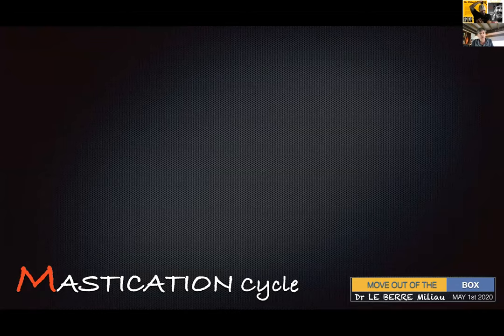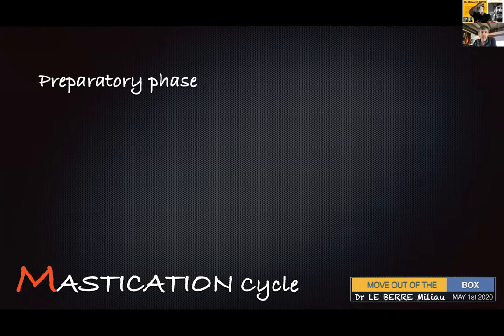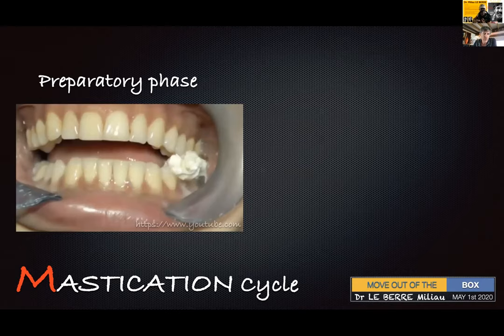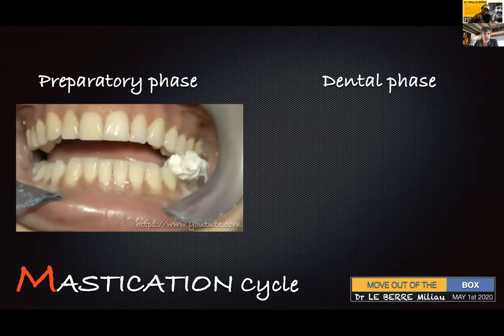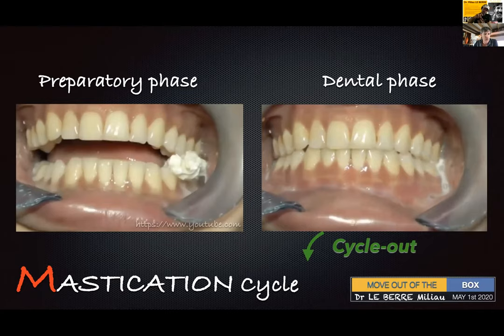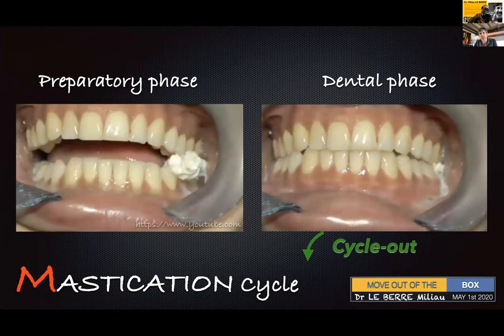How do they describe the mastication cycle? Two phases. The first is a preparatory phase, remote from the teeth — no contact between teeth — which begins at the end of the previous cycle. Two events: jaw opening, then jaw closure. The second phase is the dental phase, with contacts. Three events: cycle-in (called entrance to MIP), reaching MIP, and cycle-out (also called exit from MIP).